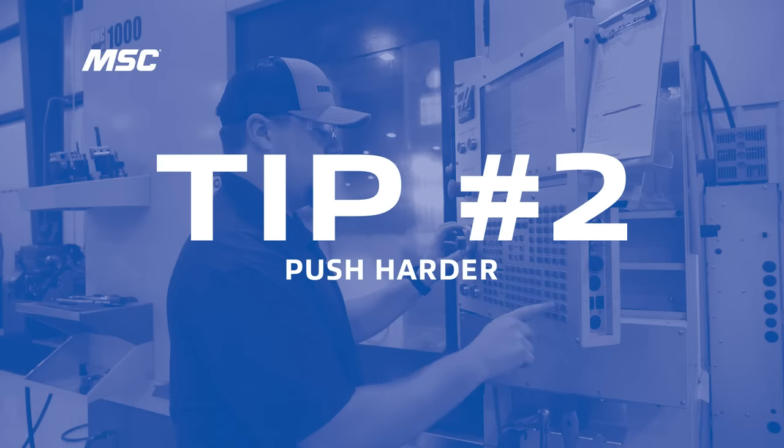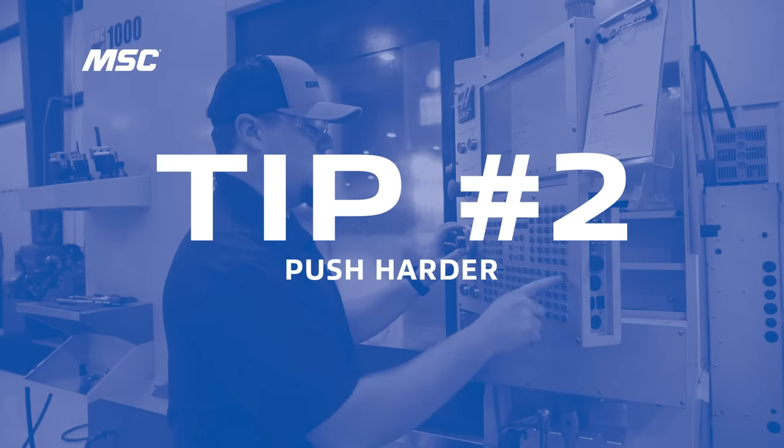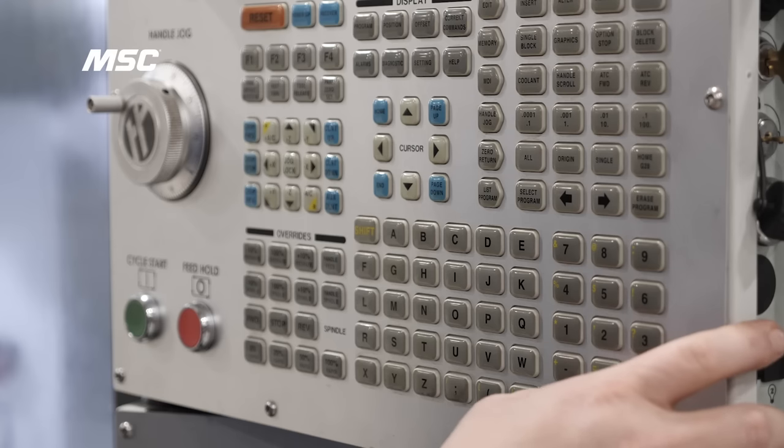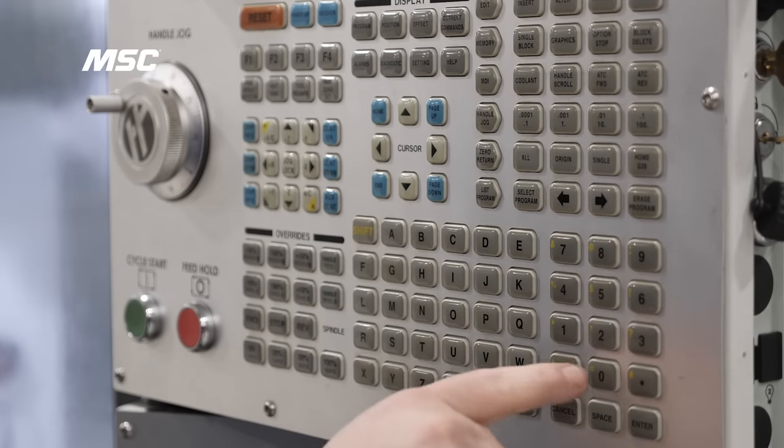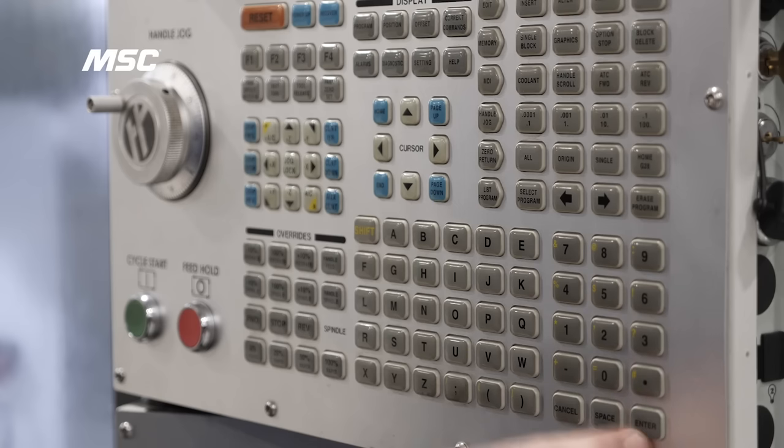The second tip that we're going to talk about is pushing harder. When most machinists would typically dial back, we would suggest the opposite in most circumstances. Stainless steels typically have a high tensile and a high yield strength, so if you aren't able to reach the minimum threshold feed per revolution, you won't have the desired penetration rate needed to achieve the desired cut that you're looking for.